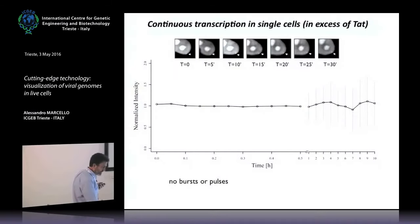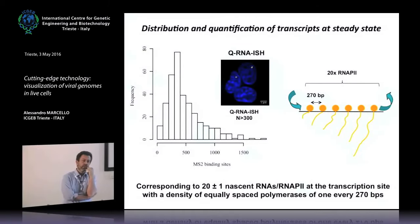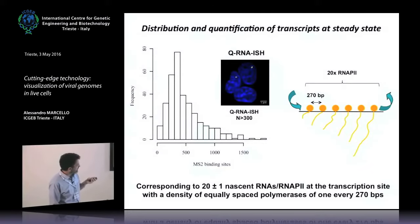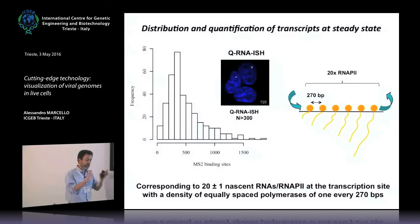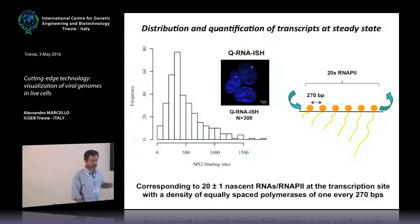We looked at the number of polymerases present on the spot. Using quantitative in-situ hybridization, we quantified the number of nascent RNAs at the transcription site. By this, we estimated that at this particular site there were around 20 nascent RNAs corresponding to 20 RNA polymerases, assumed equally spaced at 270 bases from one to each other — which corresponds more or less to the spacing of a ribosomal gene being transcribed by Pol I. This is another quantitative measure: the number of polymerases at the transcription site.